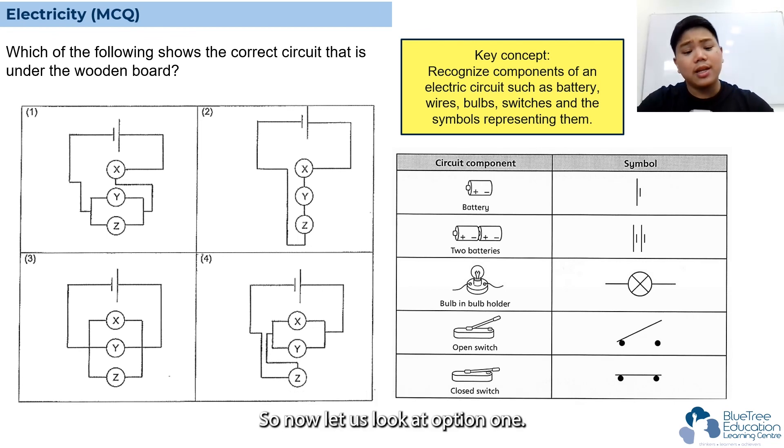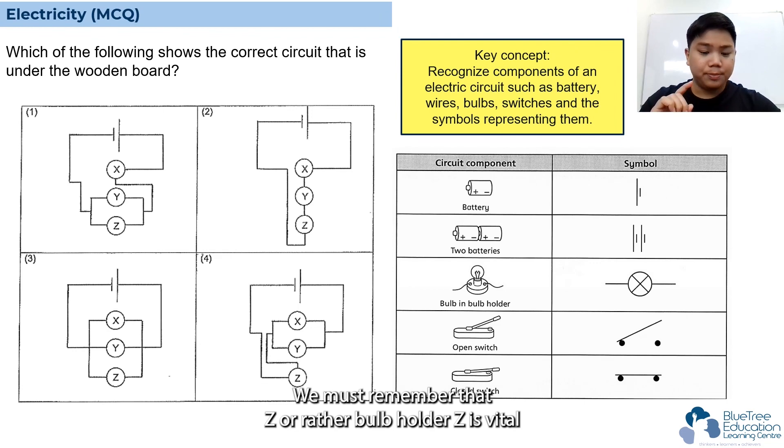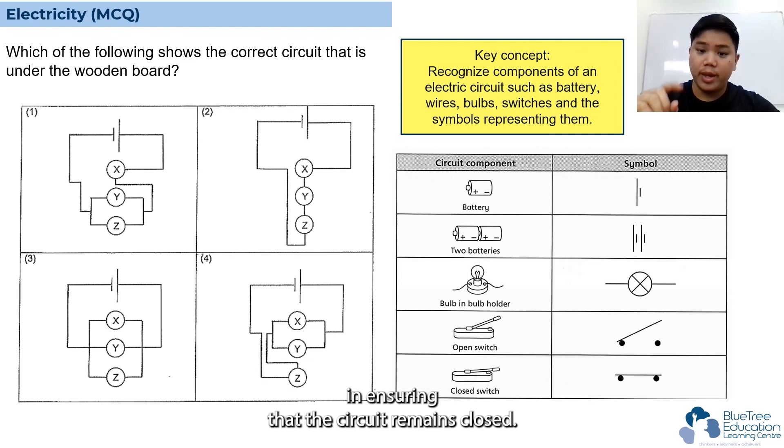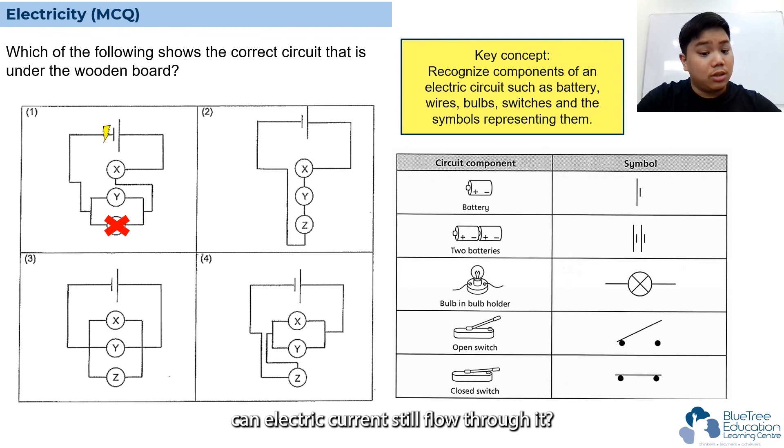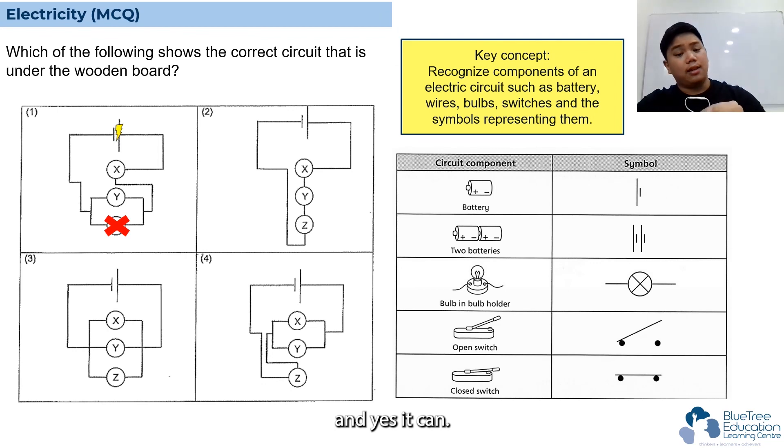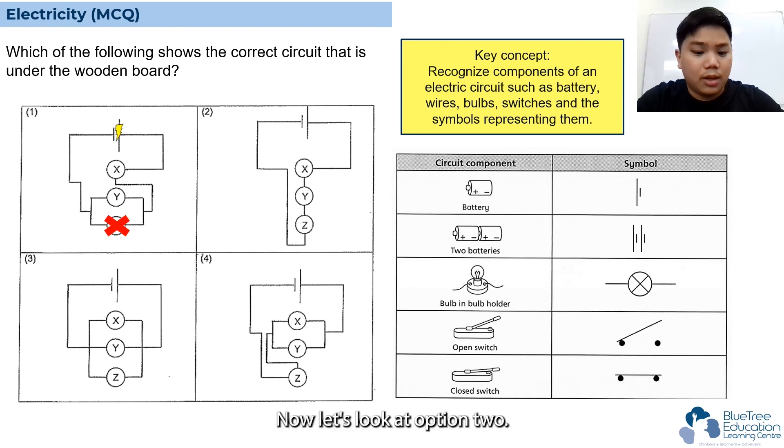Now let's look at option one. We must remember that bulb holder Z is vital in ensuring that the circuit remains closed. Let's see what happens if there is no bulb in bulb holder Z. Can electric current still flow through it? Yes, it can. It is still a closed circuit, so option one is out.